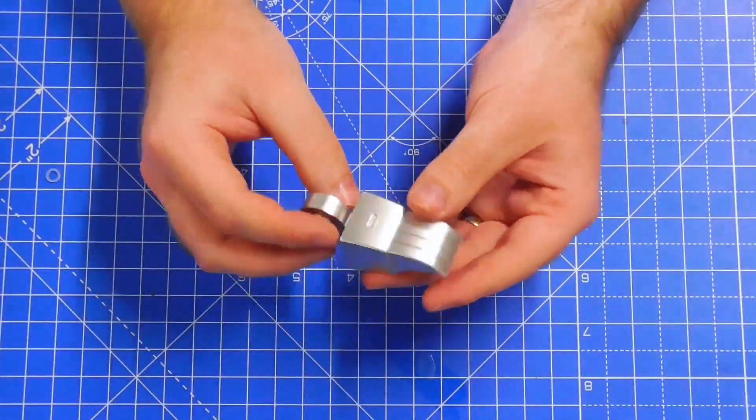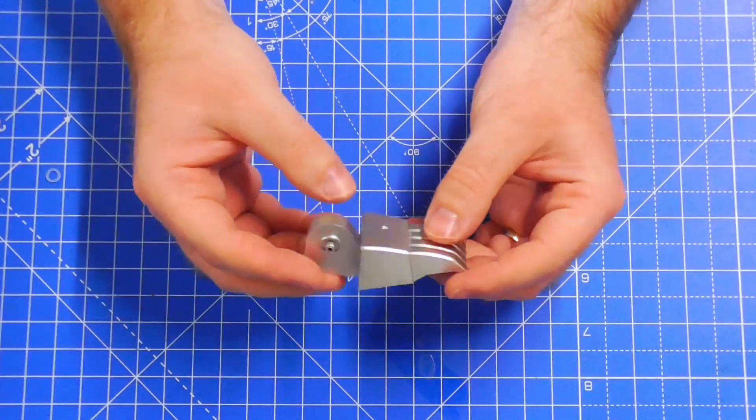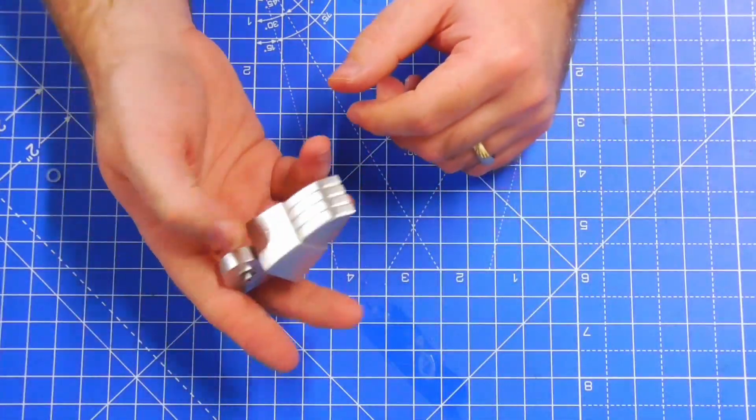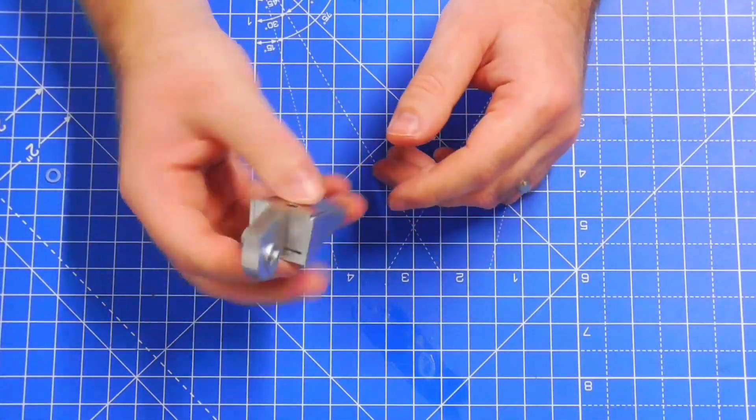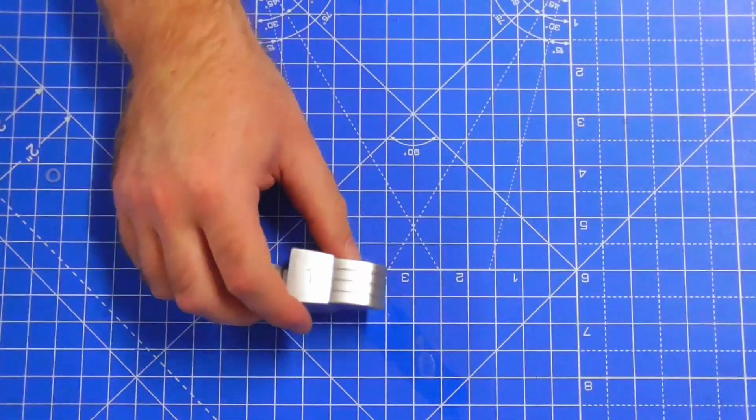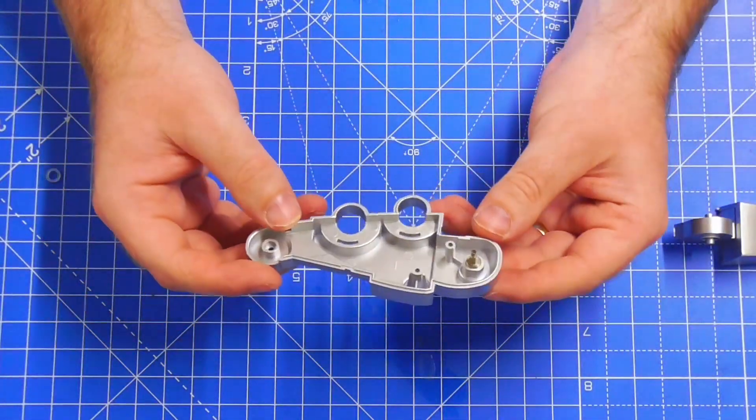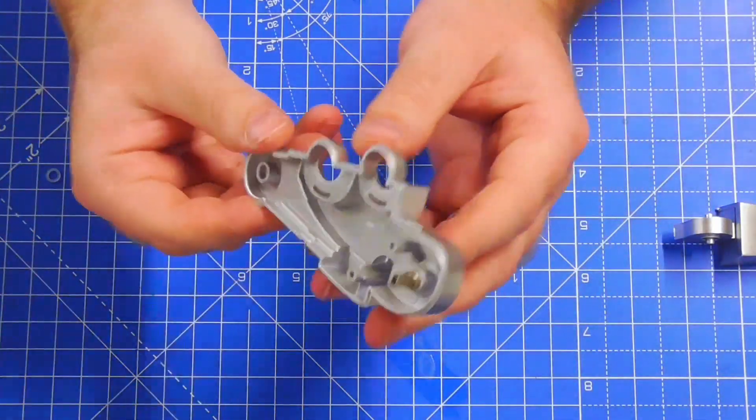And actually it's surprisingly heavy considering it's just three pieces of plastic. Not as heavy as the rest of the build of course, all the metal parts. But surprisingly heavy for a foot. So the next thing we need to do is bring this part in here. And this is the part that I couldn't undo.